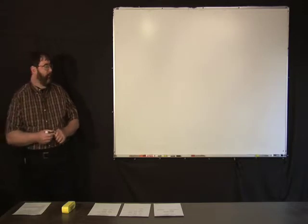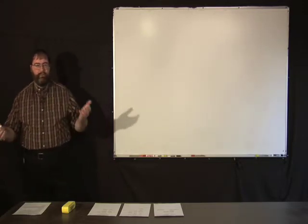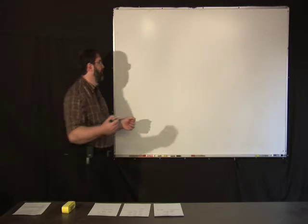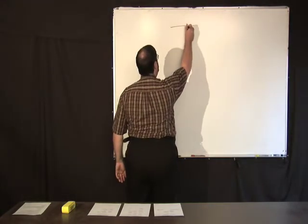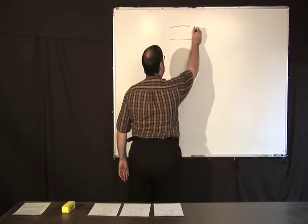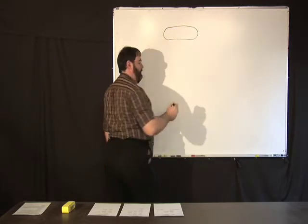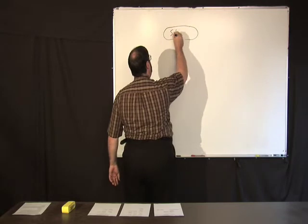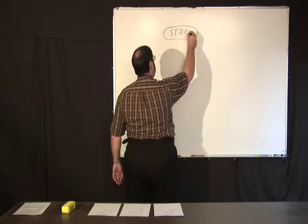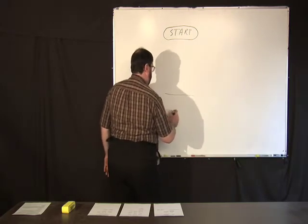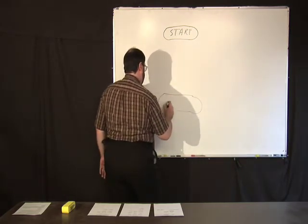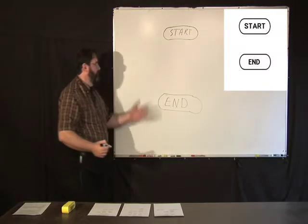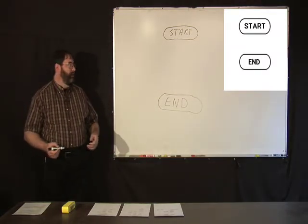We're going to go over some of the symbols. First of all, all processes pretty much need to have a beginning and an end. And the symbols that are used for beginning and end are basically kind of a box with a semicircle on each end. Sometimes you'll see an oval and usually you'll have words in here like start and then you might have another one to end a process that might have the word end in it. That is the symbols used for starting and ending a process.